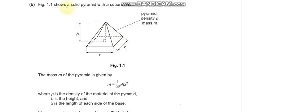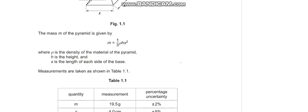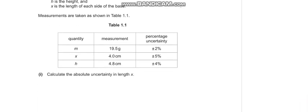Part B refers to figure 1.1, which shows a solid pyramid with a square base. The pyramid has density ρ, mass m, and height h. The mass m of the pyramid is given by m equals one-third times ρ times h times x squared, where ρ is the density of the material, h is the height, and x is the length of each side of the base. Measurements are taken as shown in table 1.1. Calculate the absolute uncertainty in length x.